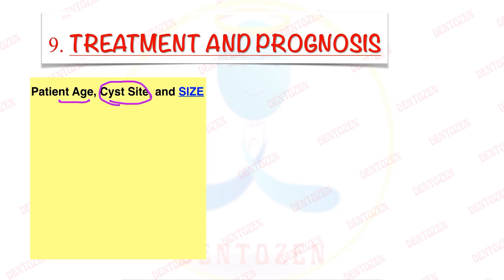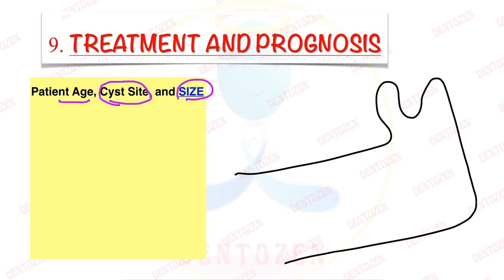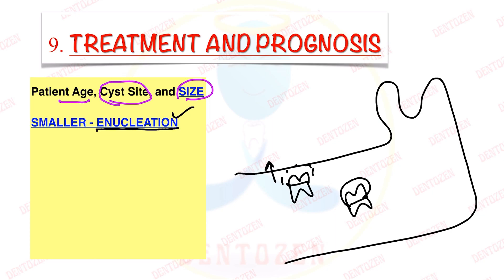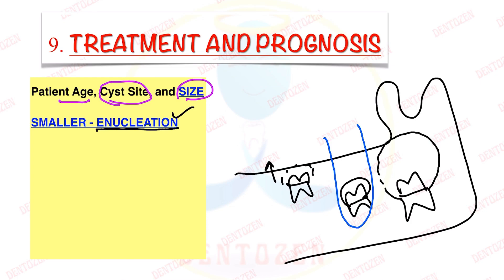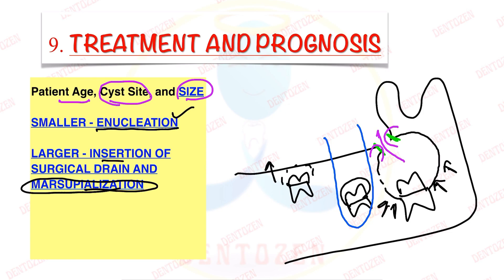Treatment depends on the age of the patient, the cyst, and its size. For small cysts, enucleation is done — the cyst is removed along with the tooth. For larger cysts, to avoid serious bone loss, marsupialization is performed: the roof of the cyst is cut and the epithelial lining is merged with the oral cavity lining, releasing pressure and allowing fluid to drain out, causing the cyst to shrink. Once small enough, enucleation can then be performed.